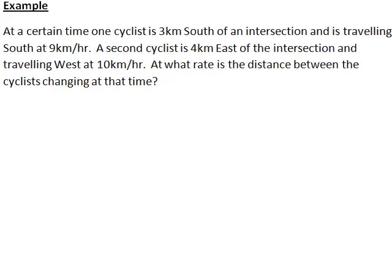And we are told here that at a certain time, a cyclist is 3 km south of an intersection and is travelling south at 9 km per hour, while a second cyclist is 4 km east of the intersection and travelling west at 10 km per hour.